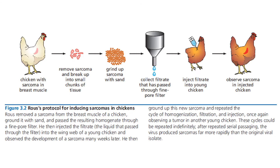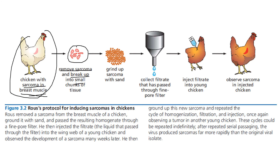Here is a pictorial view of how the experiment was done. A chicken with sarcoma in its breast muscles was identified. Rous removed those particular sarcoma tissues and broke them into small chunks. He then ground those sarcoma cells with sand, and next filtered them, collecting the filtrate that had passed through the fine-pore filters. This is where it was concluded that the particular agent was a virus — it had passed the filter test.